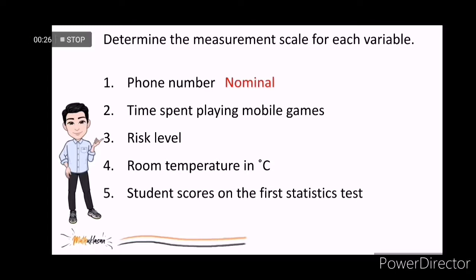Time spent playing mobile games is ratio because time is always ratio. Risk level is ordinal because it is represented by low, elevated, high, or severe.